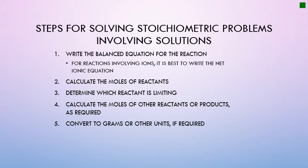We will now look at stoichiometry problems involving molarity. Treat these the same way as other stoichiometry problems: convert given information into moles, then use the balanced chemical equation to convert between substances. For reactions involving ions where a precipitate forms, it is often easier to write the net ionic equation first. Calculate moles of reactants, determine limiting and excess reagents when necessary, then calculate moles of other reactants or products. Final answers may be in grams, liters, or particles.